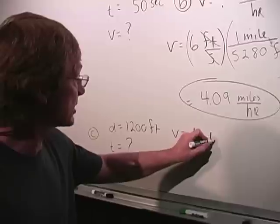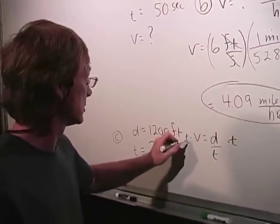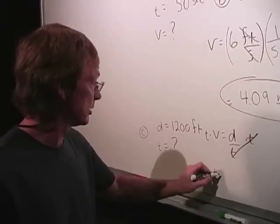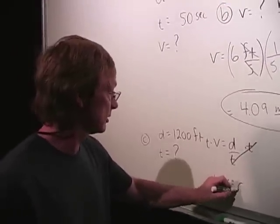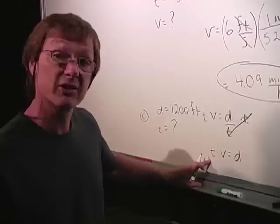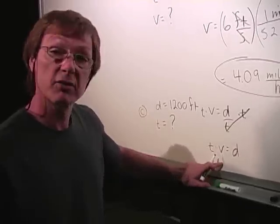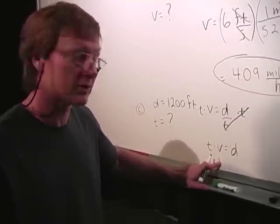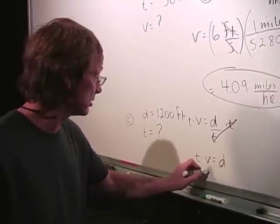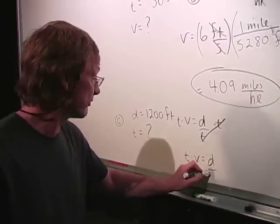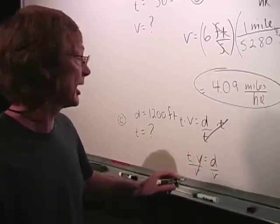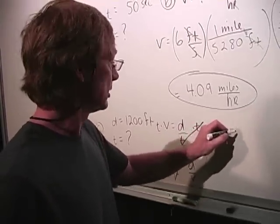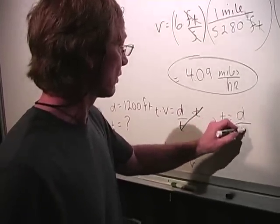So I multiply both sides by time. And I'll cancel here. And I'll get time times velocity is distance. So now I've got time on top, but I've got to get it by itself. So I'll divide both sides by the velocity. As long as I do the same thing to both sides, the equal sign is still valid. So I'll divide both sides by velocity. I cancel. And I get this equation. Time is distance over velocity.